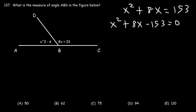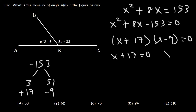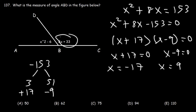We need two numbers that multiply to negative 153 but add to 8. Factors of 153: 153 divided by 3 is 51, and 51 divided by 17 is 9 — so 17 and 9 differ by 8. Using negative 9 and positive 17, we factor to get (x + 17)(x − 9) = 0. This gives x = 9 or x = −17. Plugging in negative 17 into 8x plus 33 gives a negative angle, so we use x = 9.